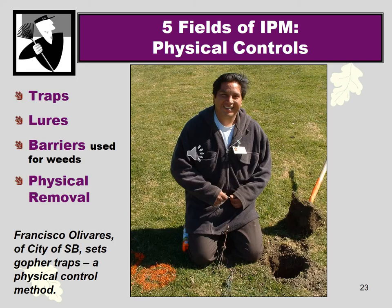Now let's look at some physical control methods of IPM. Weeds aren't the only pest problem in landscaping — there's also the ever-present gopher. This is Francisco Olivares, who works for the city of Santa Barbara, setting a gopher trap in this image. Trapping gophers is one of the most effective methods — you just have to know a little about how their tunneling works and their biology, and check and set traps every week. There aren't any foolproof methods for eradicating gophers, but in IPM we do not poison unless absolutely necessary — we trap and use non-toxic methods as much as possible.